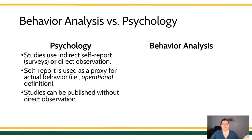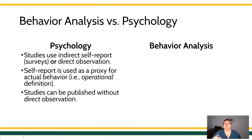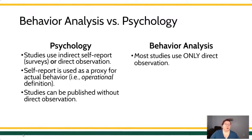Some studies in psychology can be published without any kind of direct observation. A lot of studies in psychology tend to focus on relationships between two self-report variables — what you say that you would do in this circumstance and what you report on a different metric, like your personality — as opposed to behavior analysis, where for the most part our published studies only use direct observation. It's one of the core foundational principles of our field.